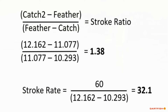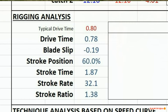The bottom line on this slide shows how to calculate stroke rate in strokes per minute by dividing 60 seconds by the time for one complete stroke. Here we measure the stroke rate at 32.1 strokes per minute.